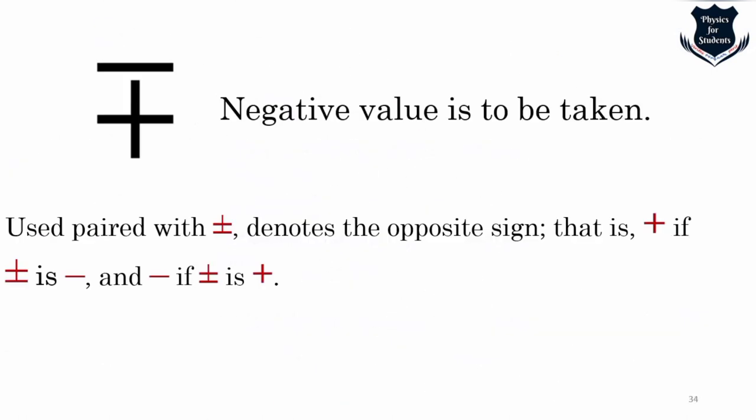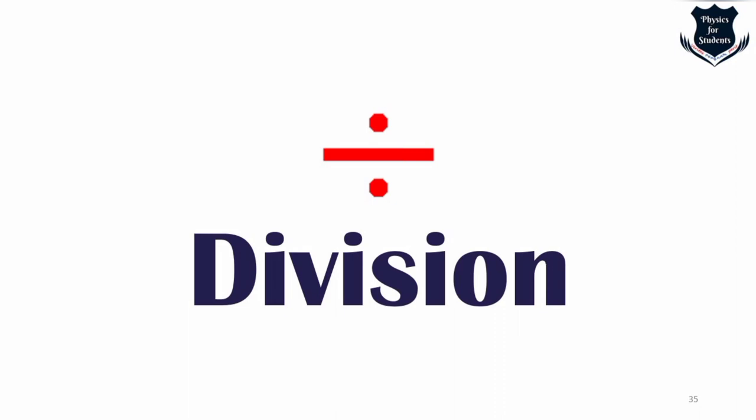There is also the minus-plus (∓) sign: used in pairs with ±, it denotes the opposite sign — if ± is plus, ∓ takes the negative; if ± is minus, ∓ takes the positive. We now come to another interesting arithmetic operator: division.